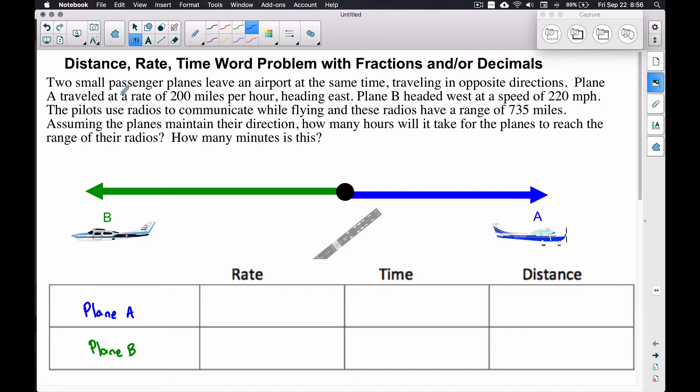Plane A traveled at a rate of 200 miles per hour, so we have 200. I'm going to write miles per hour just to remind myself. That's important too. Plane B was going at a speed of 220 miles per hour. That's good news because we have the same units of measurement.